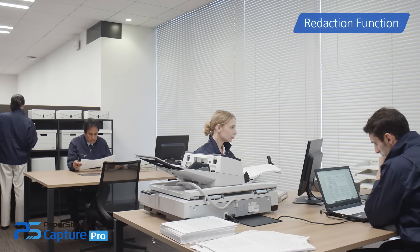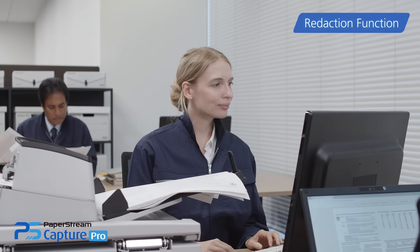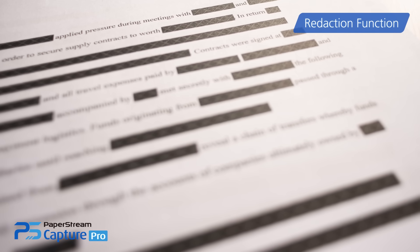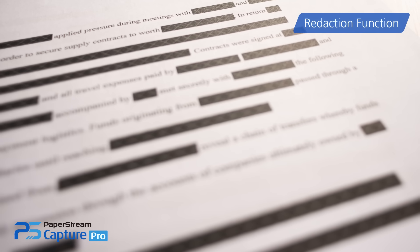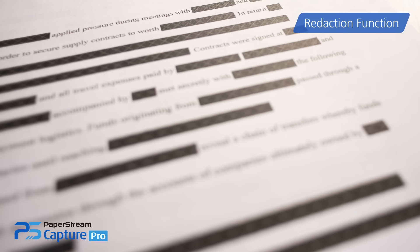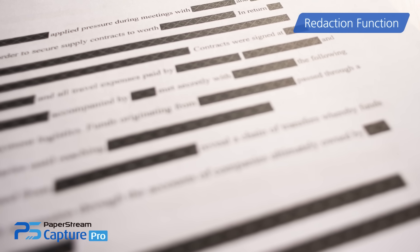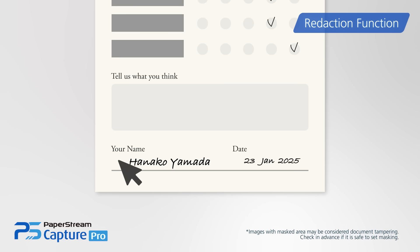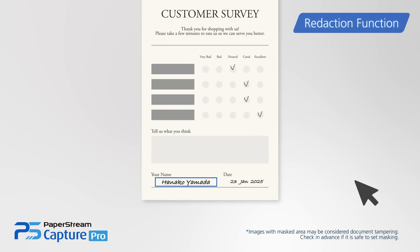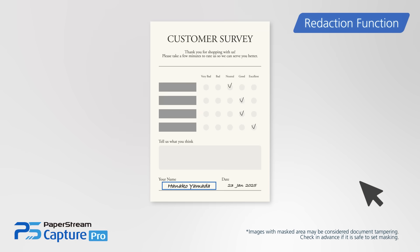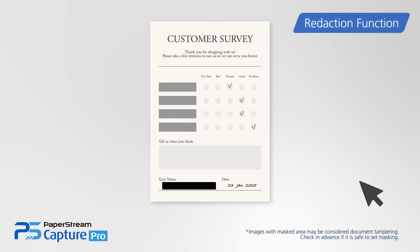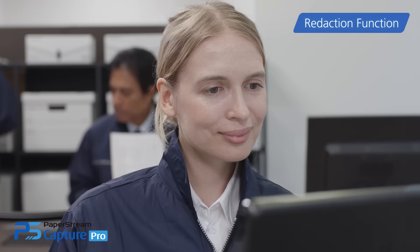Protecting sensitive data is a top priority in the modern workplace. In the past, this meant blacking out or taping over fields before scanning. PaperStream Capture Pro has a redaction function that automatically redacts targeted fields, so you save time and gain efficiency on repeated tasks.